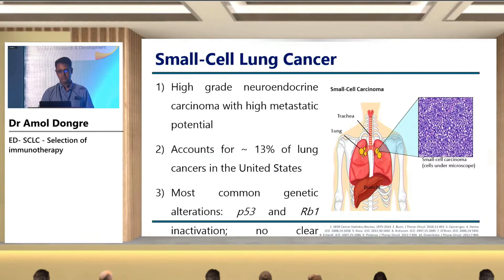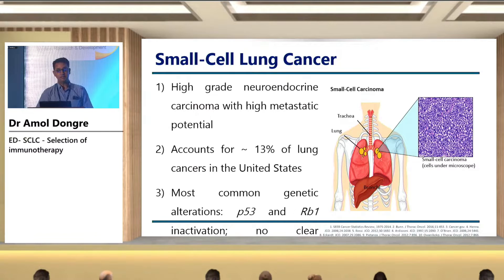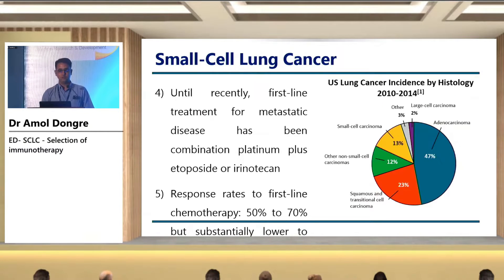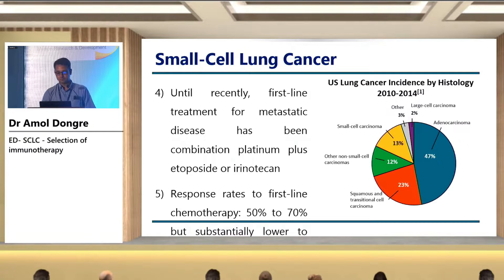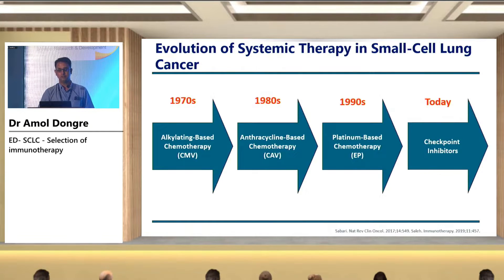So what is the rationale? We all know high-grade neuroendocrine carcinomas have a high metastatic potential, accounting for around 13% of lung cancer in the United States. Unlike NSCLC, which is an oncogene-addicted tumor, small cell lung cancers are not like that. The most common genetic alterations are P53 and RB1 inactivation. The first-line treatment for metastatic disease has been combination of platinum plus etoposide, with response rates around 50 to 70%, but substantially lower than expected.